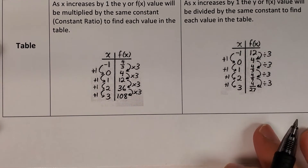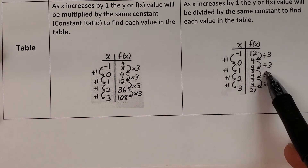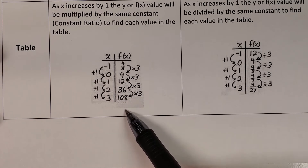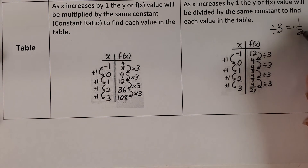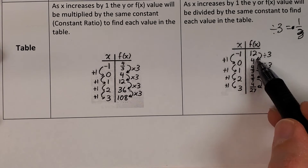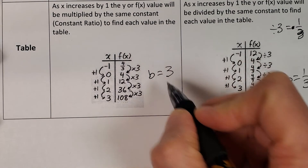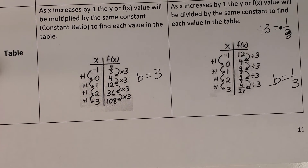For tables, in an exponential equation it's about multiplying or dividing each time rather than adding. Here you can see we're multiplying each time by 3 — that tells us it's exponential. It could also be dividing each time, and remember that dividing by 3 is the same as multiplying by one third, so b would be one third. Just like slope tells us what we're adding each time, b tells us what we're multiplying by each time.